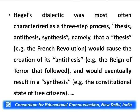Hegel's dialectic was most often characterized as a three-step process: thesis, antithesis, synthesis. He gives the example of the French Revolution as thesis. The French Revolution would cause the creation of antithesis — its own opposite, namely the Reign of Terror that followed — and would eventually result in a synthesis, that is, the constitutional state of free citizens.